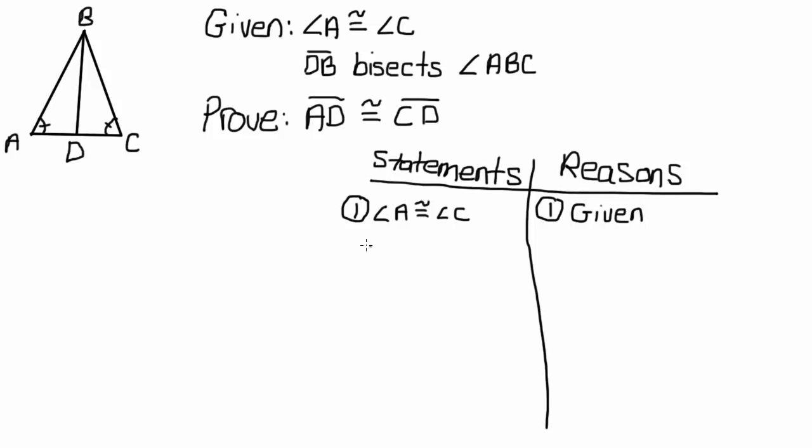And then the second given is that segment DB bisects angle ABC, and that's also given. So now what I've always taught you to do is look at what you're given and see if that can lead you anywhere first. The fact that angle A is congruent to angle C, there's not really much we can do with that just yet.